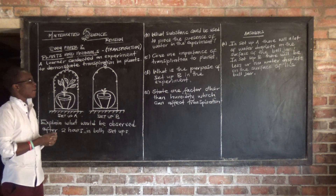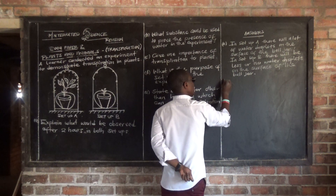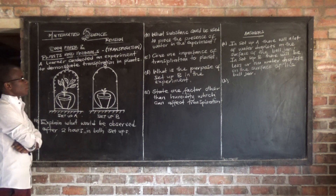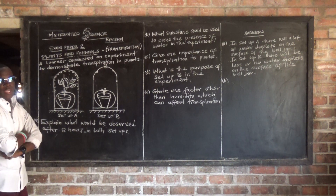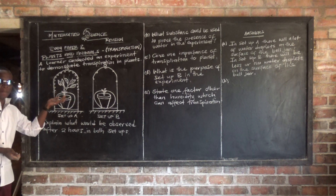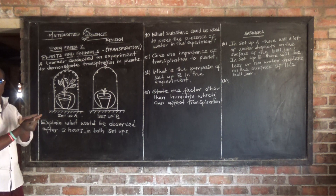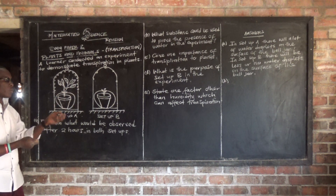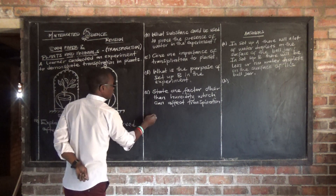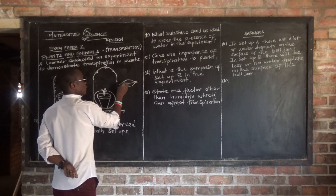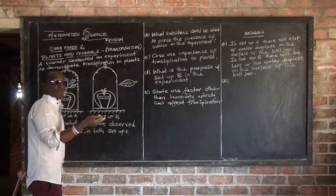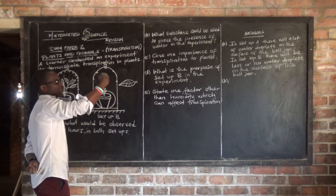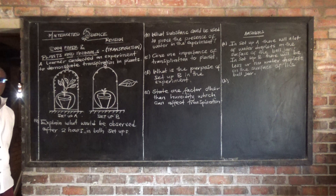Now let's look at Question B: what substance could be used to prove the presence of water in the experiment? If transpiration occurs, we know it usually occurs in the leaves. So what substance can we use to prove water loss - that is, to show that a plant has undergone transpiration?